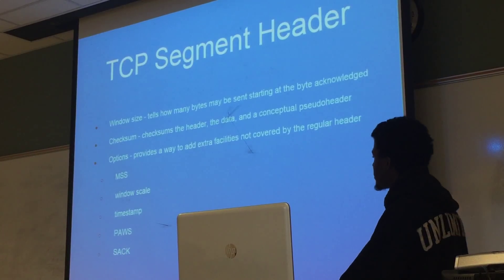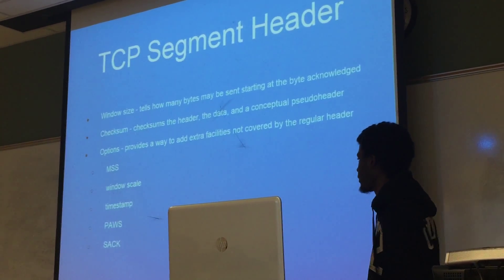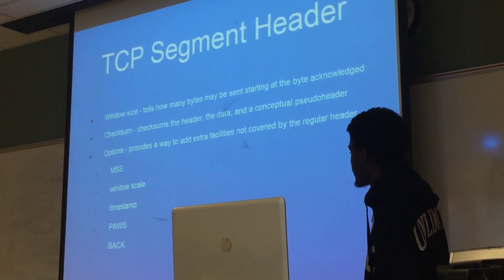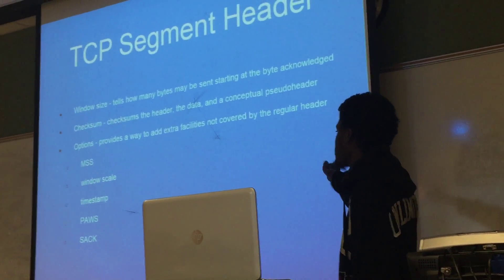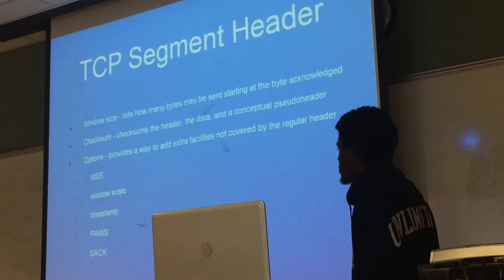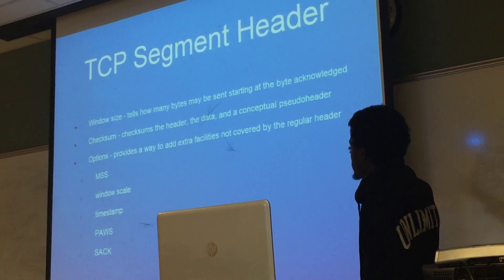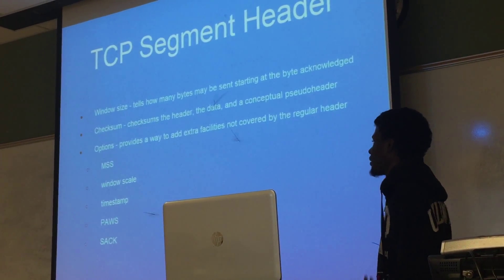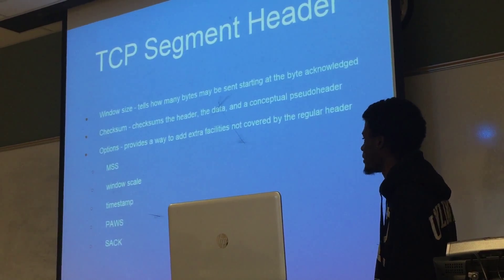The window size tells how many bytes may be sent starting at the byte that's acknowledged from the receiving host. Another part of the TCP segment header is the checksum, which contains data based off of the checksum function that checksums the header, the data, and the pseudo header. This is used for data integrity to make it more reliable, ensuring there are no anomalies.